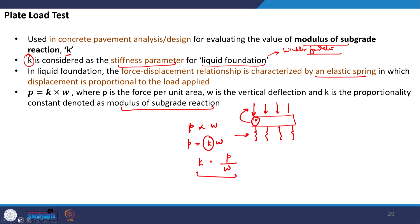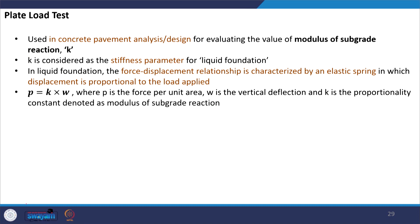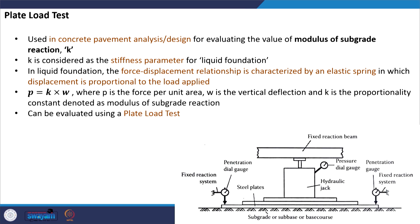K is the load pressure per unit deflection — that is the definition of K. This K is used in the analysis and design of concrete pavement, and that is why we evaluate it using the plate load test. Here we place the assembly on the subgrade or the material over which we are trying to find the value of K.